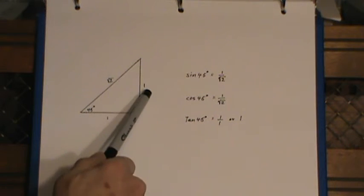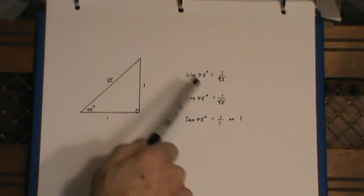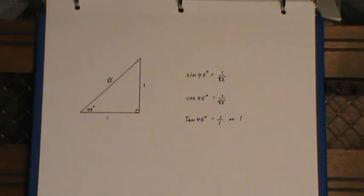The sine of 45 is opposite over hypotenuse. You notice the cos and the sine are exactly the same for 45 degrees. And the tan of 45 is 1 because the opposite and the adjacent are both 1.